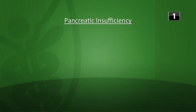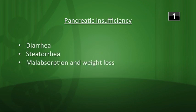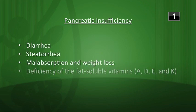It's time for the three question one for Biochem 12. What is the typical presentation of a patient with pancreatic insufficiency? You might see diarrhea, steatorrhea, malabsorption, weight loss, and deficiency of the fat-soluble vitamins: A, D, E, and K.